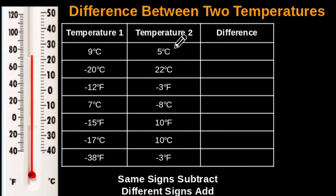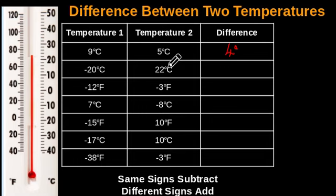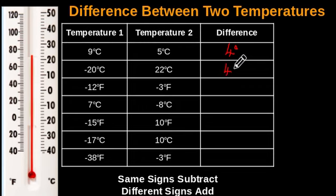Welcome back. Nine degrees Celsius and five degrees Celsius — they are both positive temperatures, same signs. Subtract the lesser value from the greater value: nine minus five, that's four degrees as the difference. Next, negative 20 degrees Celsius and 22 degrees Celsius — negative temperature, positive temperature, different signs. We add: 20 plus 22, that's 42 degrees as the difference.